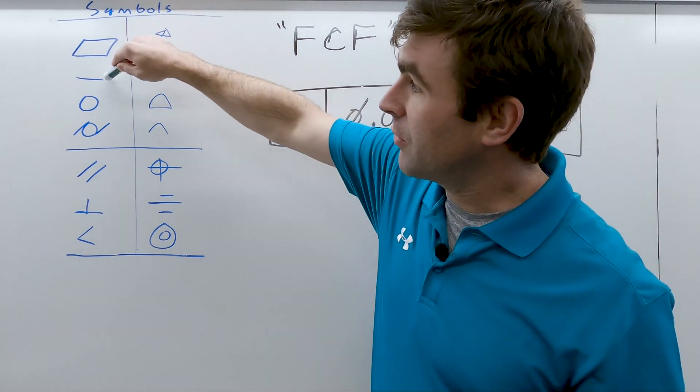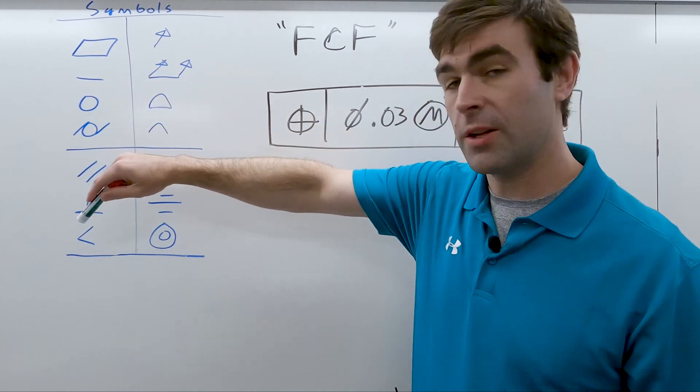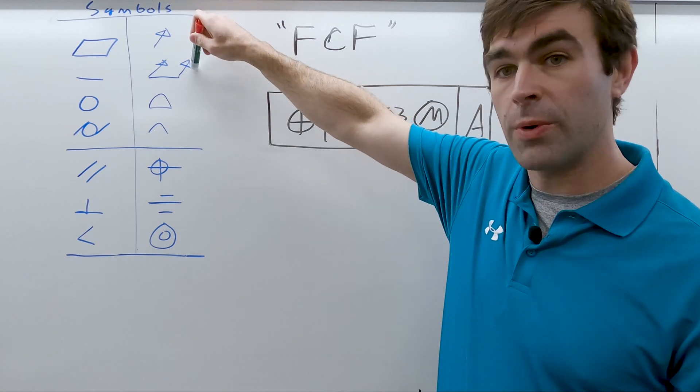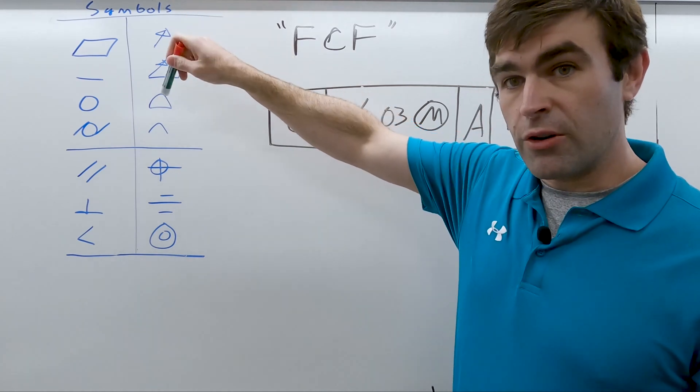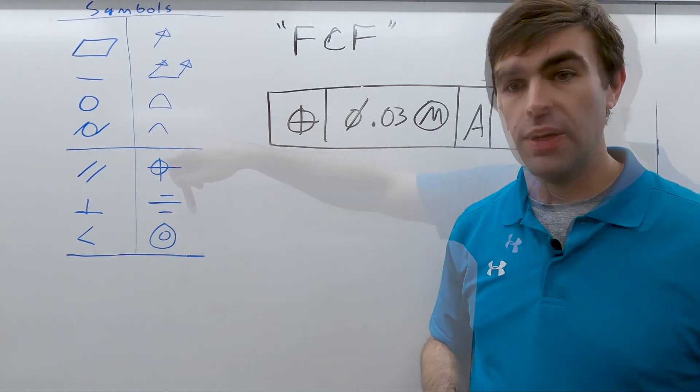So we have flatness, straightness, circularity, cylindricity, parallelism, perpendicularity, angularity, circular runout, total runout, profile of a surface, profile of a line, position, symmetry, and concentricity.